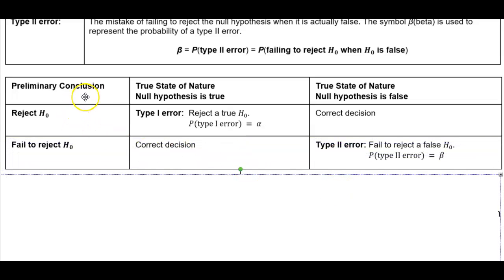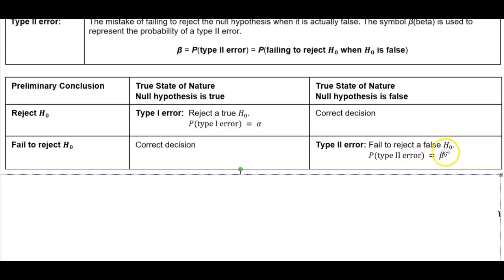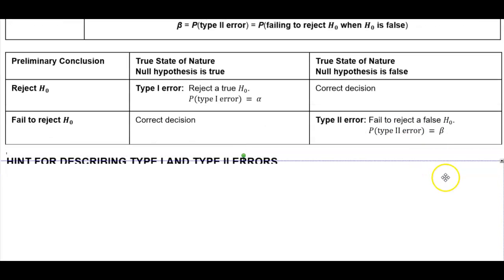When we fail to reject the null hypothesis and the true state of nature is that the null hypothesis is true, that would be the correct decision. However, if the true state of nature is that the null hypothesis is false, then this would be the type 2 error — we fail to reject a false null hypothesis — and therefore the probability of a type 2 error is equal to beta.